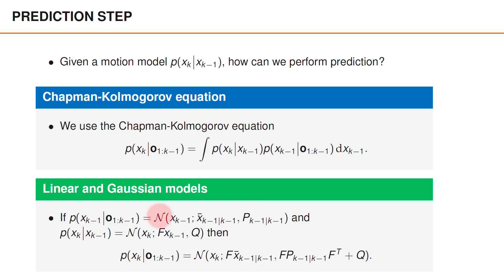For instance, if we have linear and Gaussian models, the prediction step would exactly follow the equations of a Kalman filter, such that we get the predicted mean by taking the posterior mean at time k-1 and multiplying with the motion model matrix F, and we get the predicted covariance matrix by taking F P F^T plus the covariance of the motion noise Q.